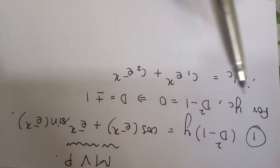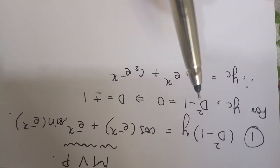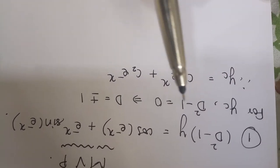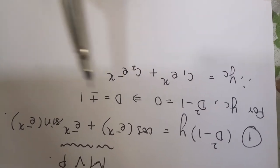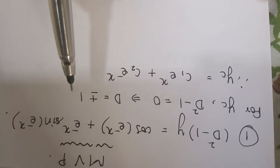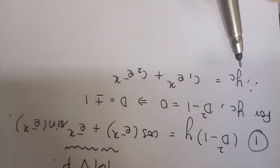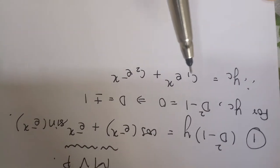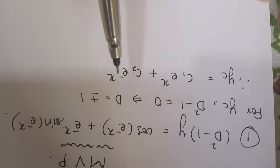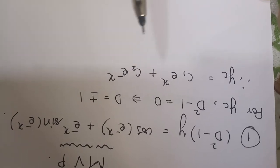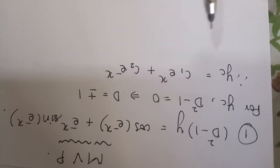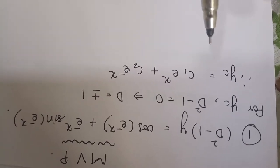For finding yc, as usual we take d-squared minus 1 equal to 0, that is d equals plus or minus 1. Thus yc is equal to c1 e raised to x plus c2 e raised to minus x.